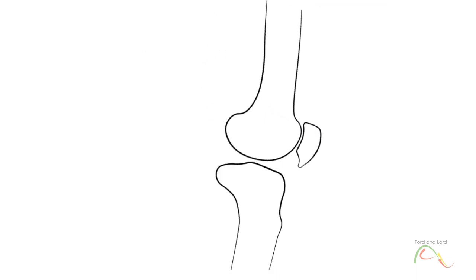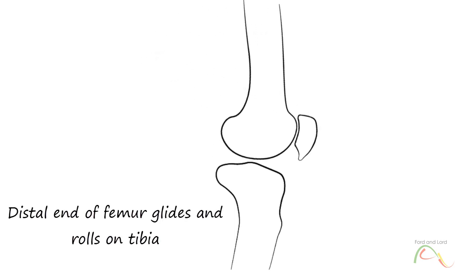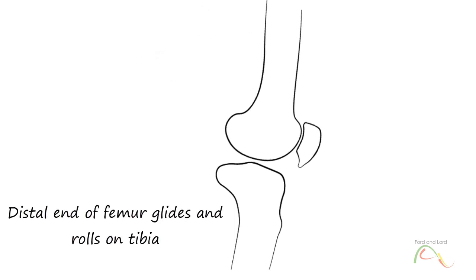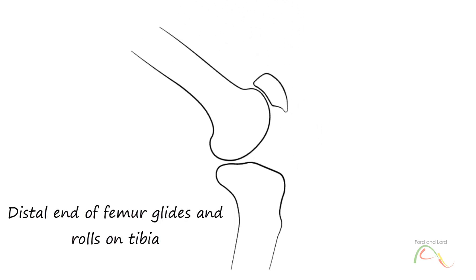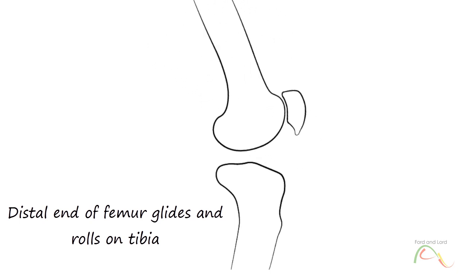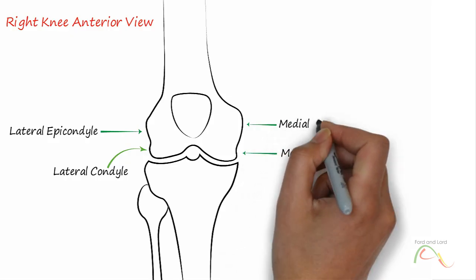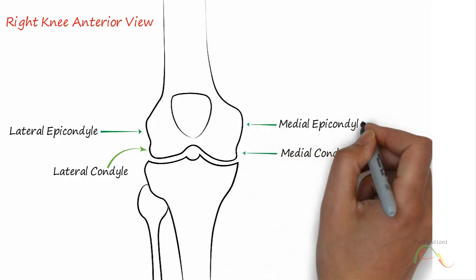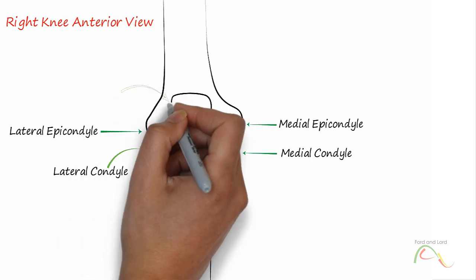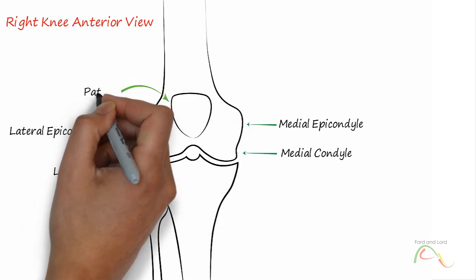The knee functions as a hinge joint and is responsible for flexion and extension of the leg. This action is accomplished by rolling and gliding motions of the femur on the tibia. In addition, some rotation of the leg is made possible when the knee is flexed but not when it is extended. The knee is very well designed for weight-bearing in the extended position and provides excellent support during walking and running, adding to the mobility capabilities of human beings.